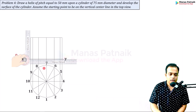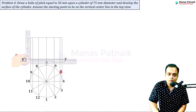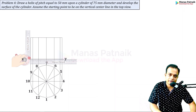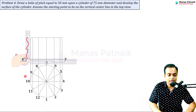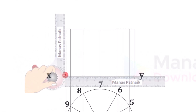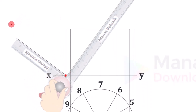Since you have divided this circle into 12 equal parts, you have to divide this pitch also into 12 equal parts. If you did 8 divisions on the circle, do 8 divisions here — make sure the number of divisions is the same in both the front and top views. Use a mini drafter — draw a random line at any angle, and at equal distances of 5 mm keep making points.